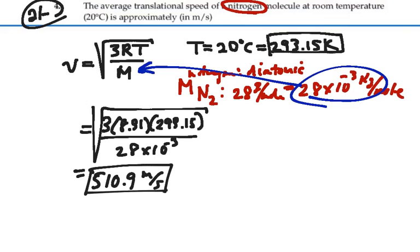So the average translational speed of a nitrogen molecule at room temperature is 510.9 meters per second.